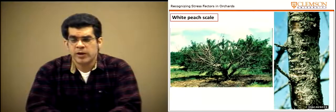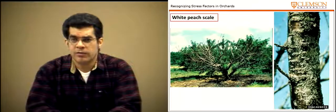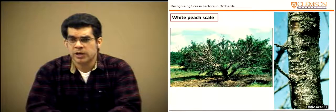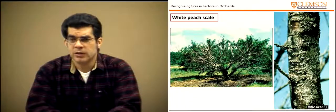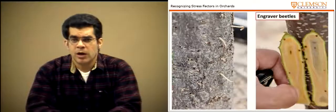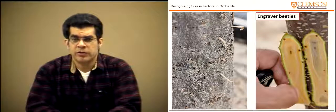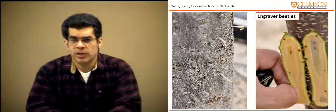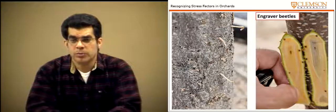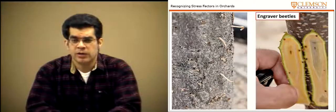The white peach scale is another insect of interest. It is small and difficult to see, and growers often won't notice it until an entire scaffold is gone. We typically manage white peach scale with two dormant oil applications in winter — the oil suffocates the scale preventing respiration. A more rare insect damage seen in stressed orchards is the engraver beetle, which bores through the bark into the wood, with each entry hole providing a place for other pathogens and significant tree stress.